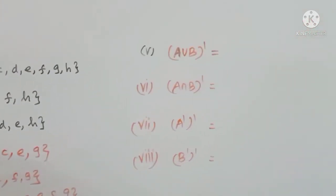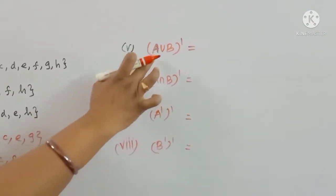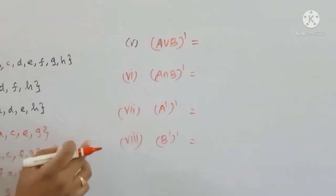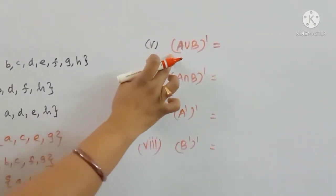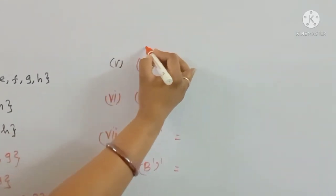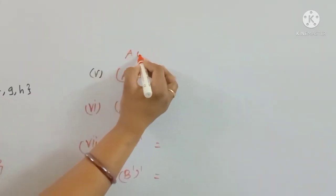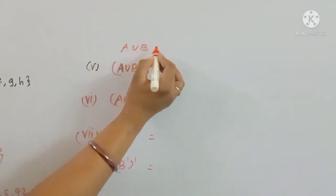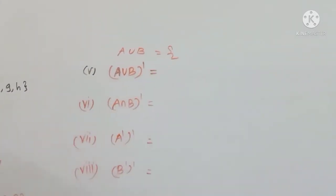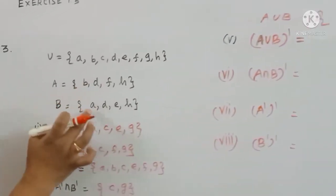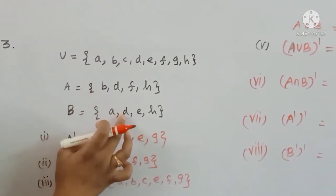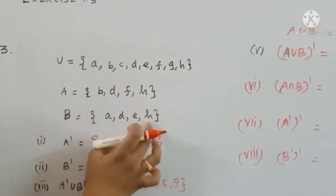A union B whole dash is the complement of A union B. This gives us the elements outside both A and B.